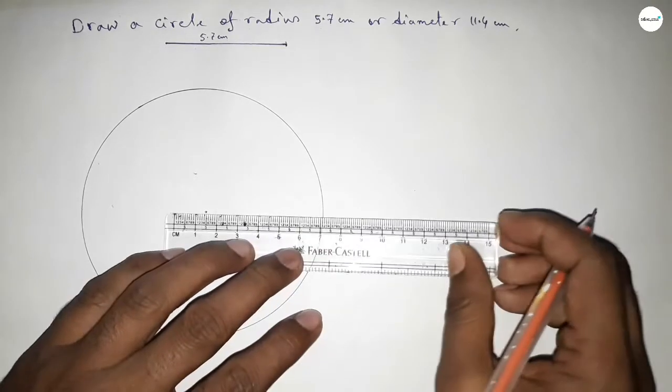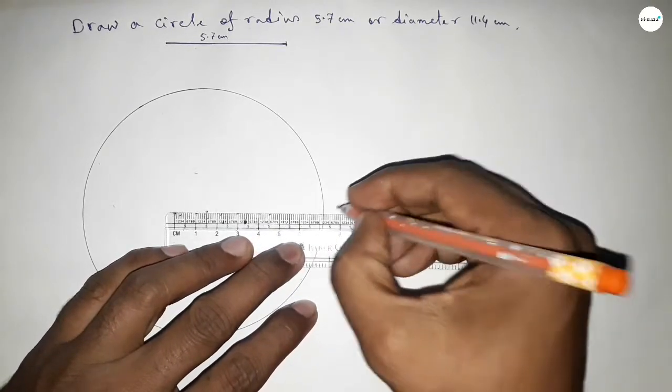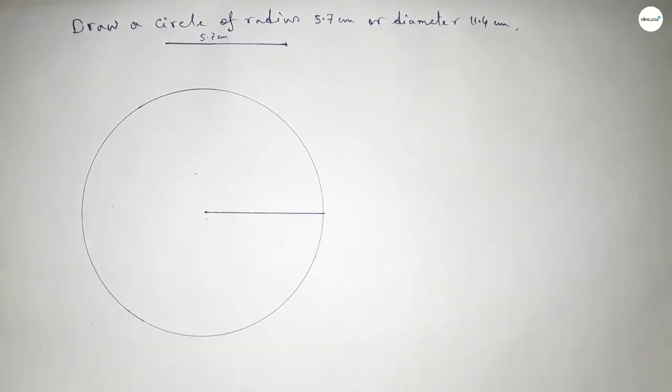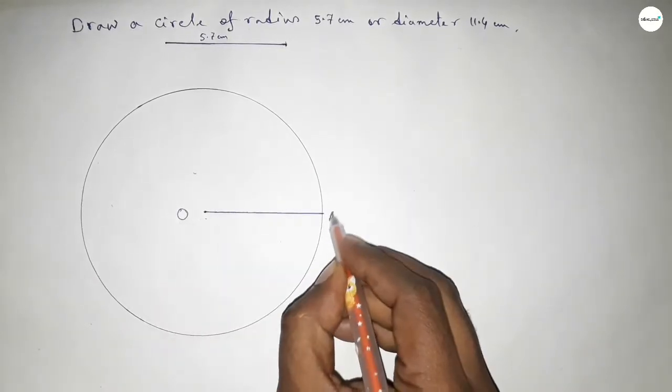Now joining this one, and this is the radius of this circle. Taking center O and here point A.